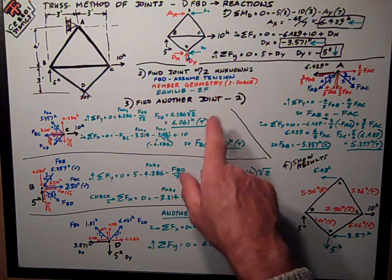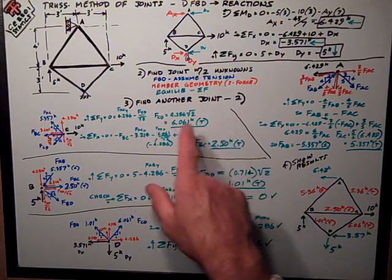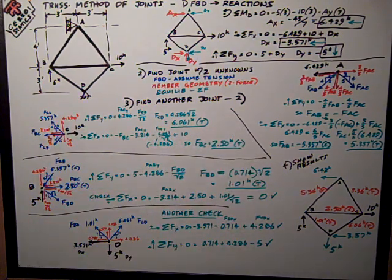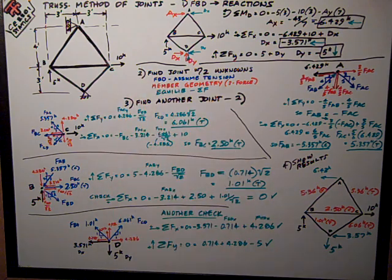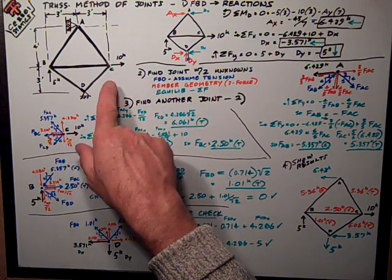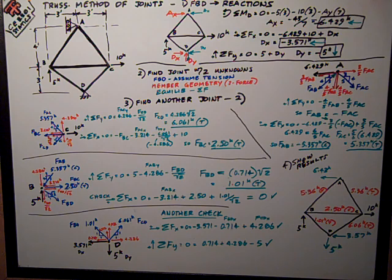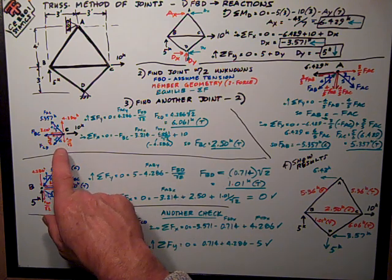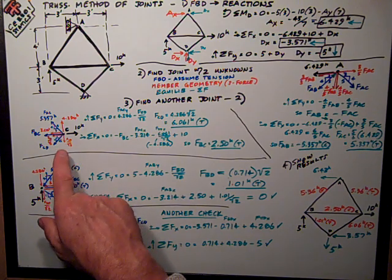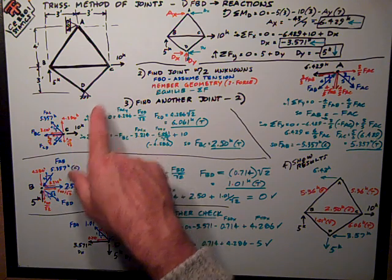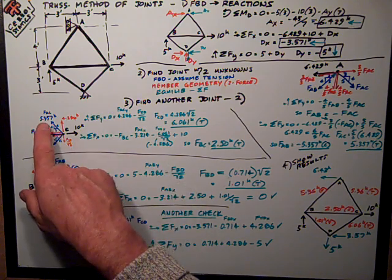The steps of the method of joints is to then find another joint. It has two unknowns. Repeat back up there. So I'd go down to joint C, and here's the free body of joint C with the known applied force of 10 kips.